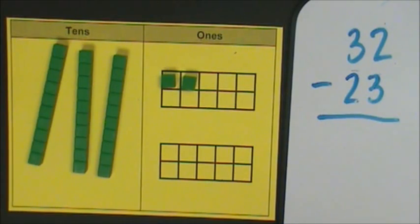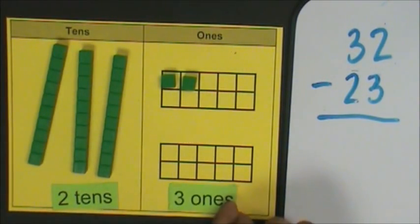Then I will place tens and ones cards to represent twenty-three. Two tens, three ones. Now I will subtract.